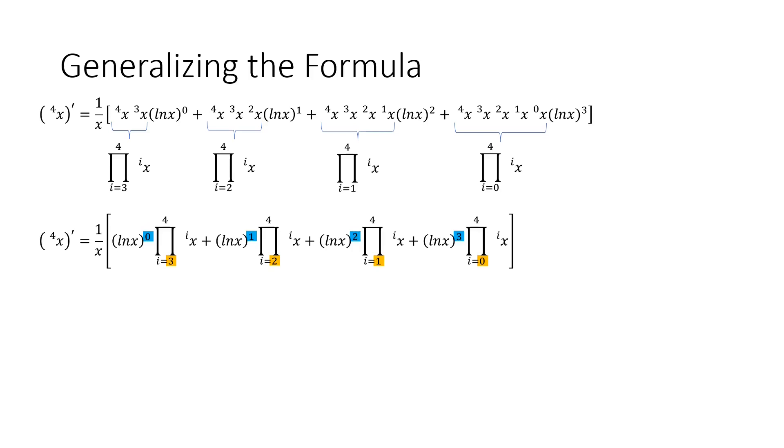So let's label blue as k and orange as j. Then each term is written in this form. Where j plus k is 3. Or 4 minus 1. We can write k in terms of j in the following way. And now to simplify our formula in terms of a summation symbol. At last, a compact formula for the fourth tetration of x.